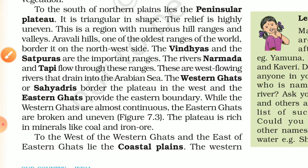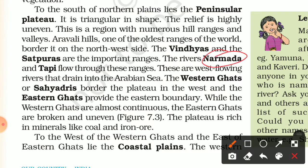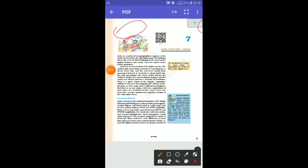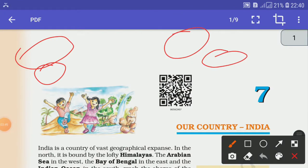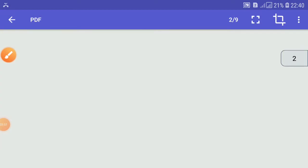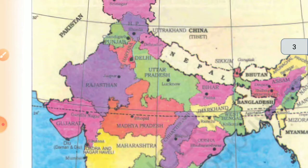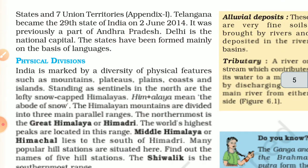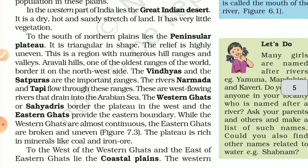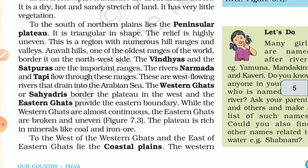The Vindhya and Satpura are important ranges of the Peninsular Plateau. The rivers Narmada and Tapti flow through these ranges — the Narmada and Tapti flow between the Vindhya and Satpura. These are west-flowing rivers that drain into the Arabian Sea.